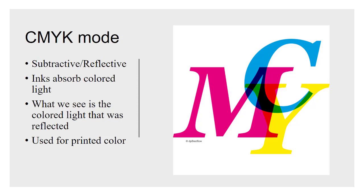When you look at a sheet of paper that has ASU maroon on it, for example, that maroon pigment is absorbing all the other frequencies or wavelengths of light except for what we perceive as that maroon. So that's subtractive. CMYK is used strictly for printing — we don't really use it for much of anything else — and it also has some limitations, which we're going to talk about next.